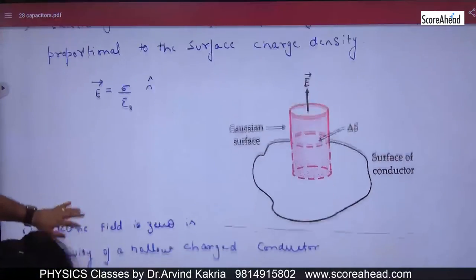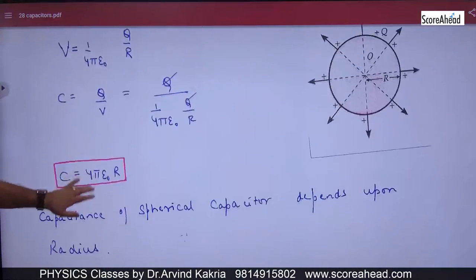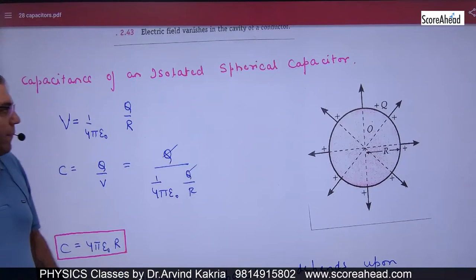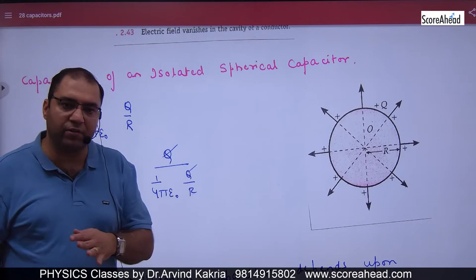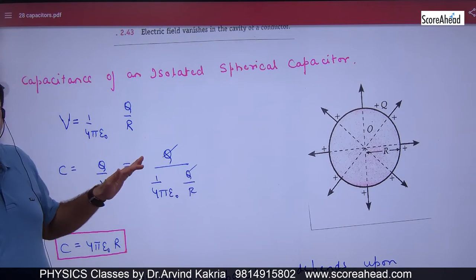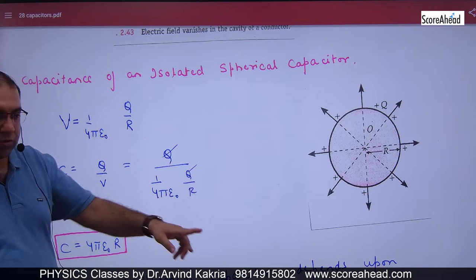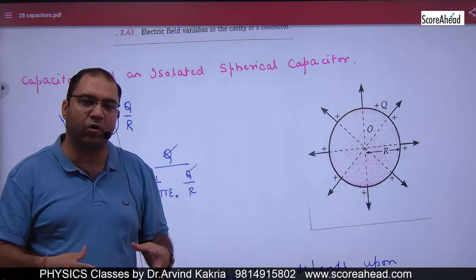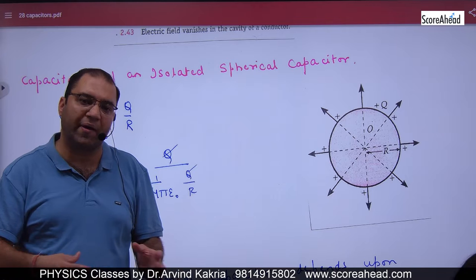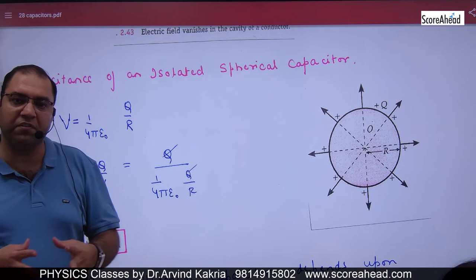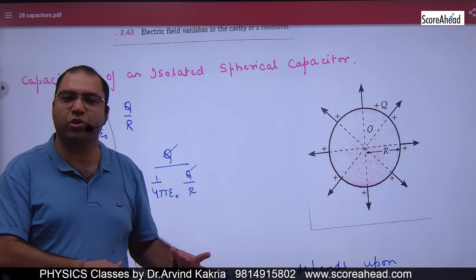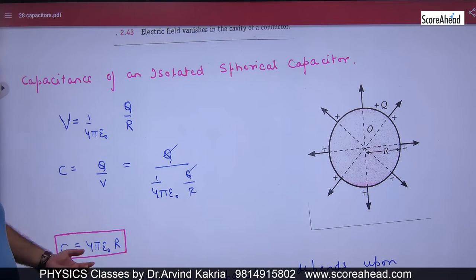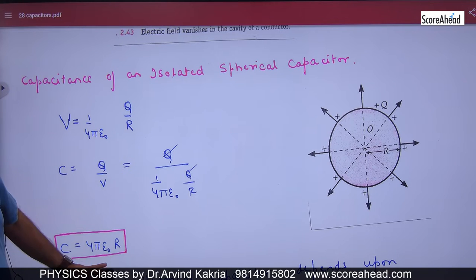We have discussed all the properties. Spherical capacitor — we have discussed this: that if a capacitor is a sphere and a sphere has charge Q, then the capacitance value of that sphere is equal to 4πε₀r. This is also discussed.